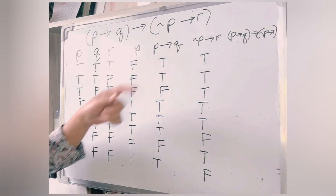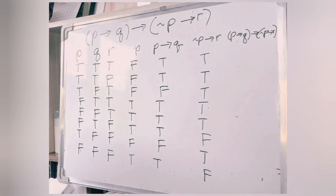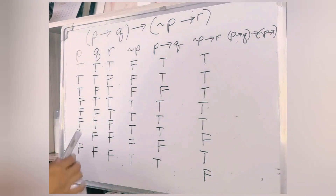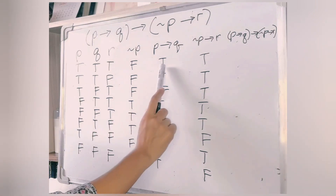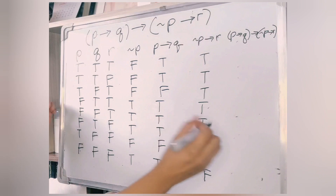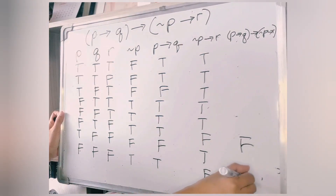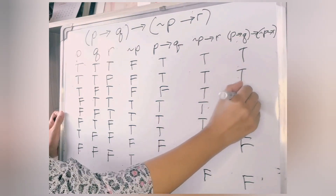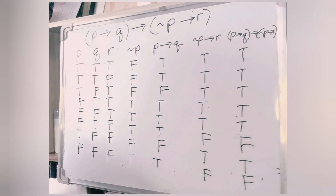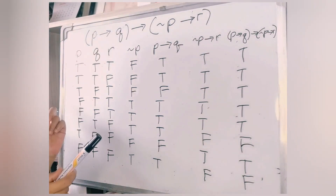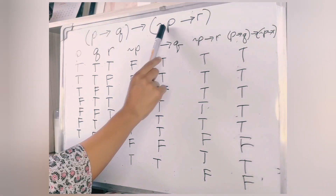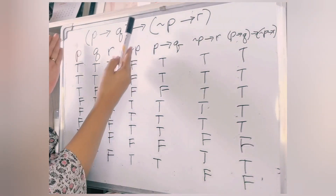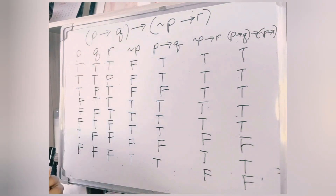We have six true cases and two false cases for not P implies R. Now for the last column — the full compound proposition — we look for the case where true implies false. We find two such cases, both yielding false, and the rest are true. That's the complete truth table. All we have to do is apply the precedence of logical operators: evaluate negation first, then expressions inside parentheses, before evaluating the conditional truth values.